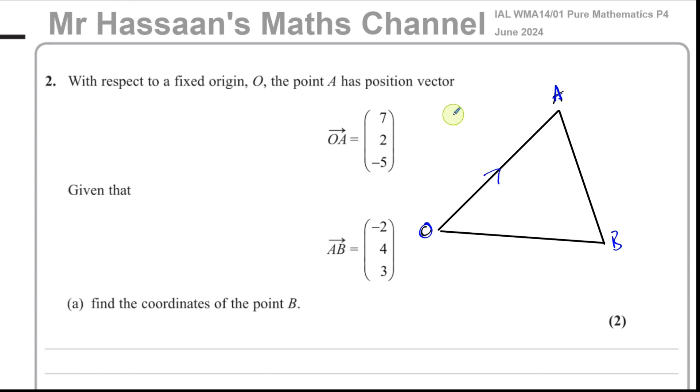Let me put B over there. So then OB would be like this, and this would be AB. A diagram always makes things very clear in vectors.